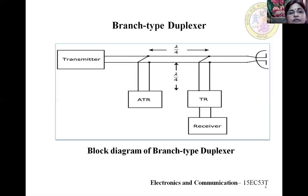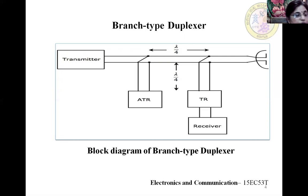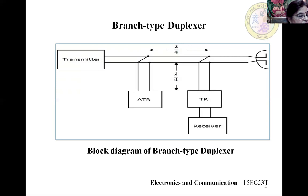Switching systems of this type are called duplexers. An effective radar duplexer system must meet the following four requirements. First, during the period of transmission, the switch must connect the antenna to the transmitter and disconnect it from the receiver. Second, the receiver must be sufficiently isolated from the transmitter during transmission of the high power pulse to avoid damage to the sensitive receiver. Third, after transmission the switch must rapidly disconnect the transmitter and connect the receiver to the antenna, so that targets close to the radar can be seen. Fourth, the switch should absorb an absolute minimum of power both during transmission and reception.